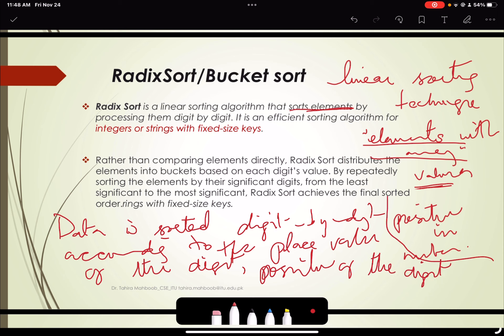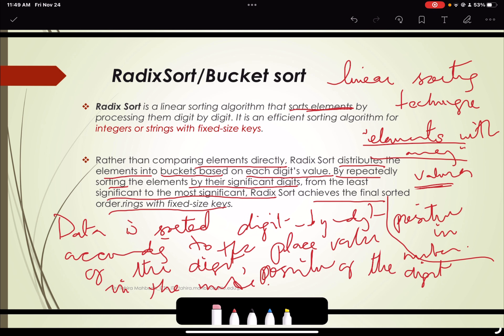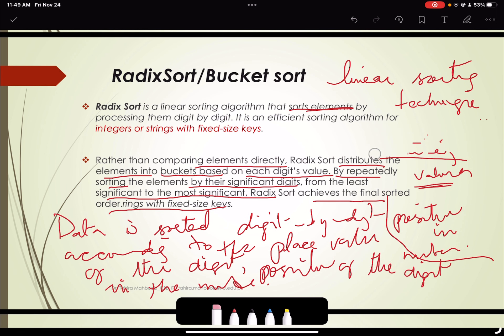So rather than comparing elements directly, it distributes the elements into buckets based on each digit's value. And by repeatedly sorting the elements by the significant digit from the least significant to the most significant digit, Radix sort achieves the final sorted ordering with the fixed size keys. So the assumption is that we have fixed size key.